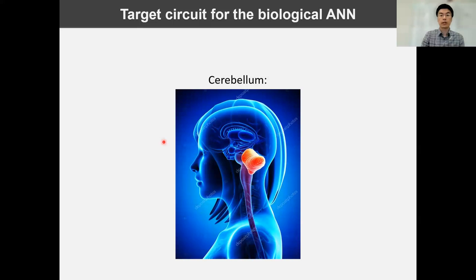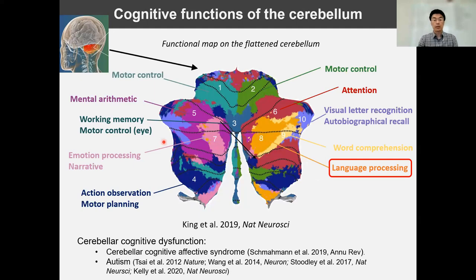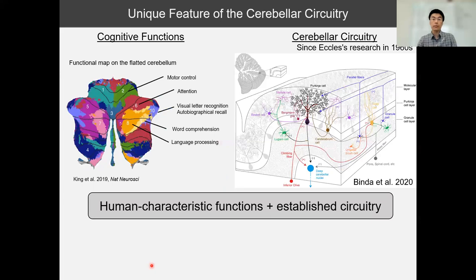In order to build the biologically constrained ANN, I focused on the fascinating cerebellum. Although the cerebellum is considered the center of motor control, it has broad functions including human characteristic cognitive functions such as language processing and cerebellar cognitive affective syndrome and autism. Furthermore, cerebellar anatomical circuitry has been proposed for more than 50 years. So the human characteristic function plus the established circuitry make the cerebellum my ideal target to build the biologically constrained ANN to investigate human characteristic cognitive functions.